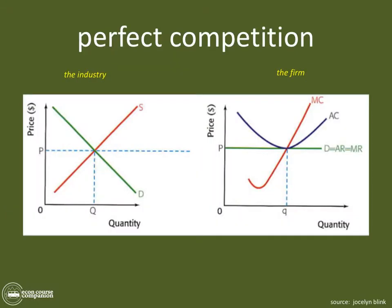The way we're going to get there is to take a look first at the industry supply and demand curve. In perfect competition, in order to show all of the costs, revenues, and profit of a firm, you must first account for where the price P came from — and where it came from is the industry supply and demand curve.